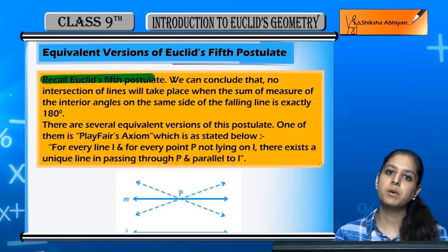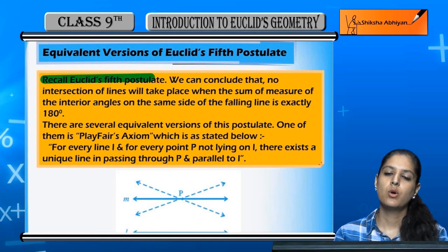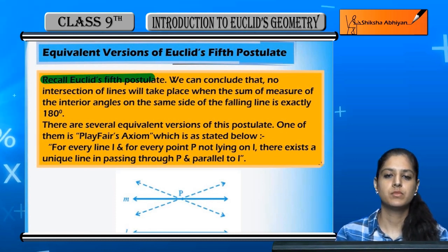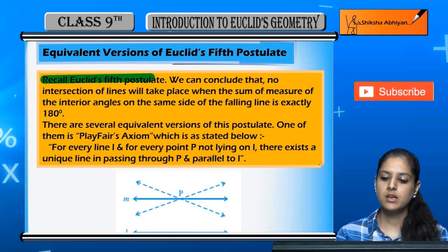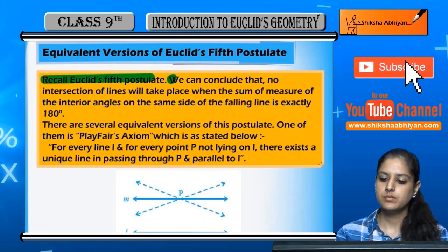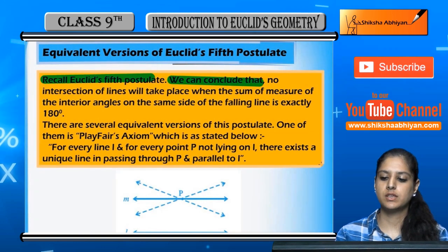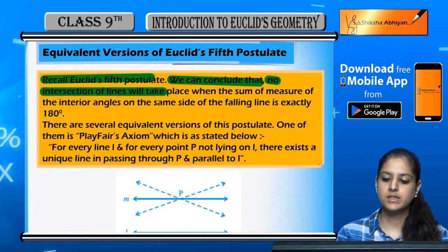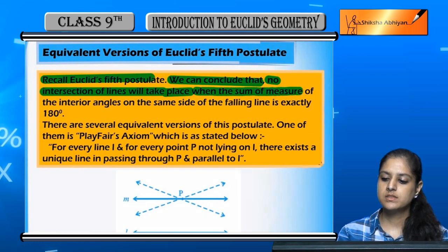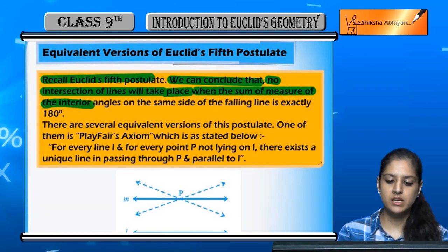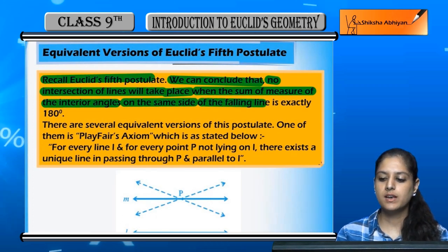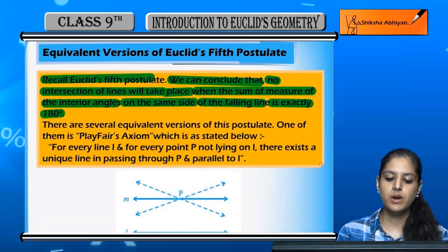So if the sum is less than 180 degrees, if we extend the two lines then they will meet at any other point. Okay, so we can draw a conclusion from this: no intersection of lines will take place when the sum of measure of the interior angles on the same side of the falling line is exactly 180 degrees.